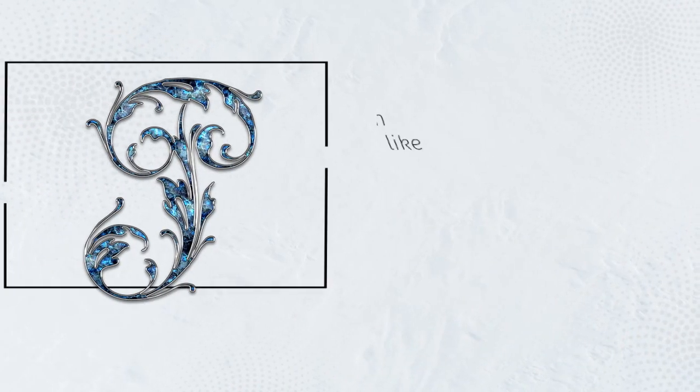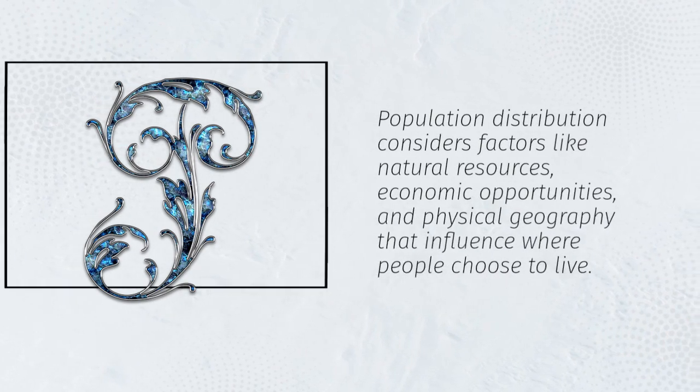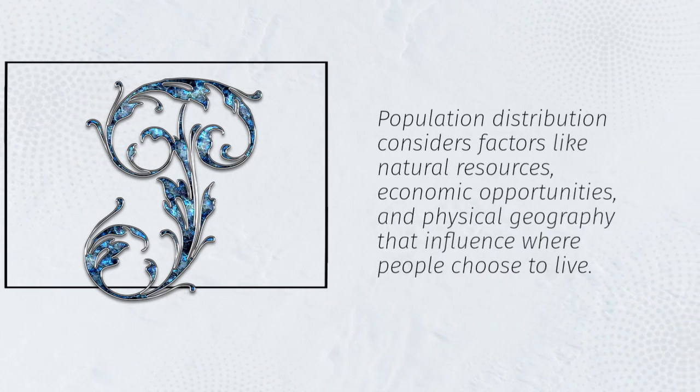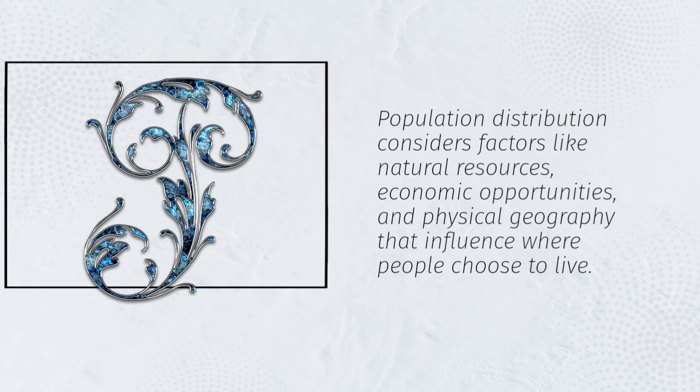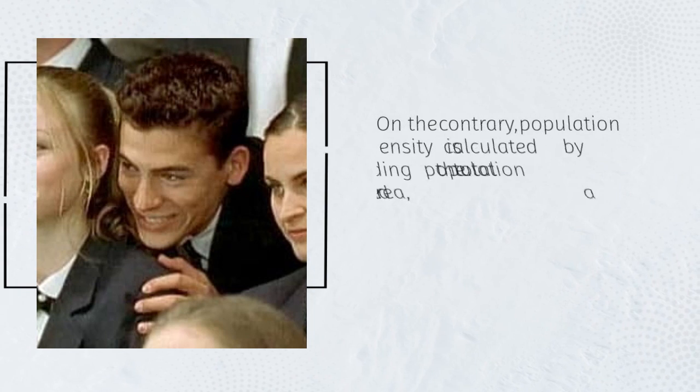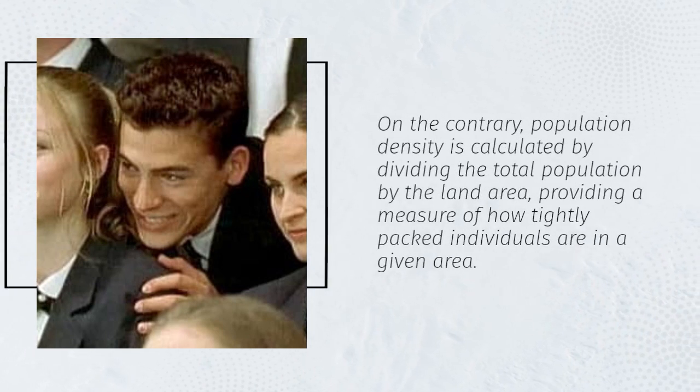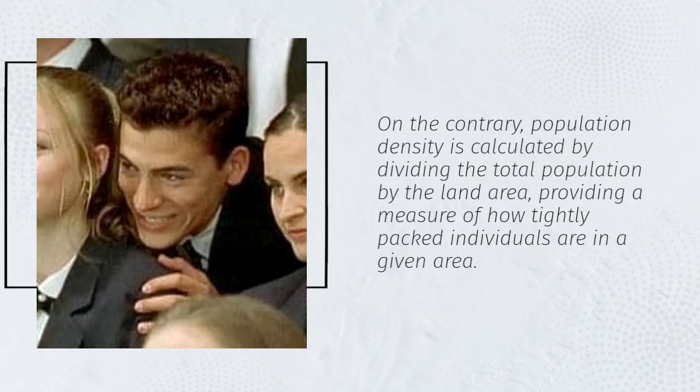Population distribution considers factors like natural resources, economic opportunities, and physical geography that influence where people choose to live. On the contrary, population density is calculated by dividing the total population by the land area, providing a measure of how tightly packed individuals are in a given area.